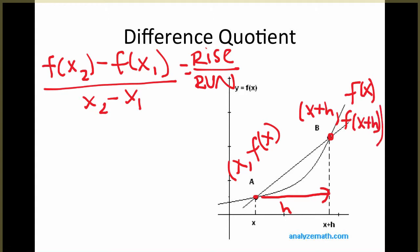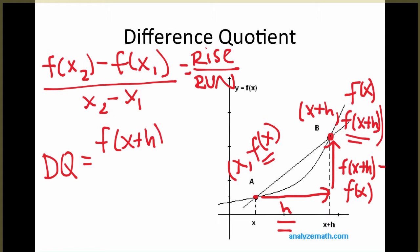So what that gives us if we do the rise over the run, the rise here is our change in y values: f of x plus h minus f of x. And the run is given to us already, it's h. So our formula for the difference quotient is simply f of x plus h minus f of x, all divided by h.